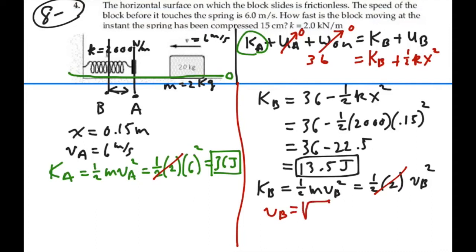So that's going to be the square root of 13.5, and that is 3.67 meters per second. So the velocity at B, in this case, is 3.67 meters per second.